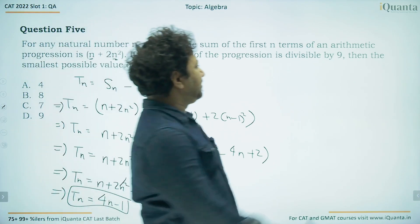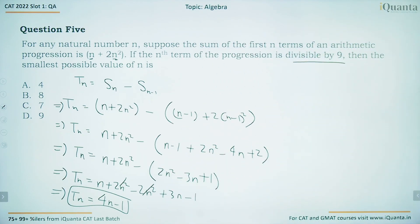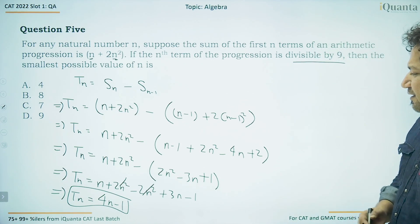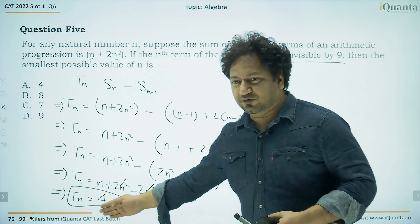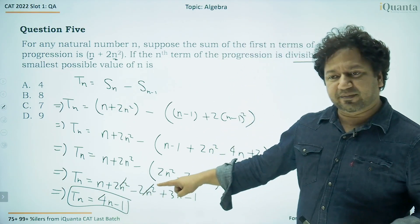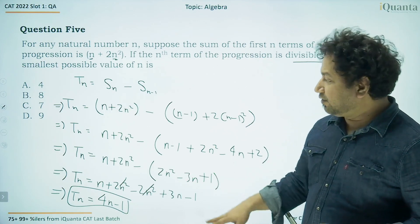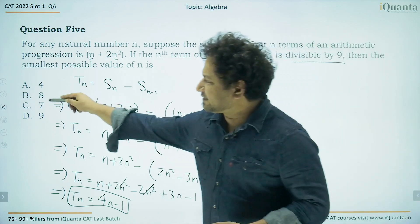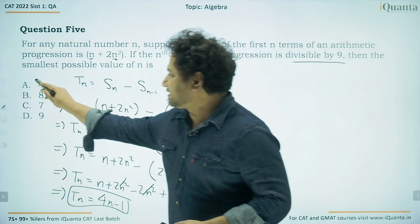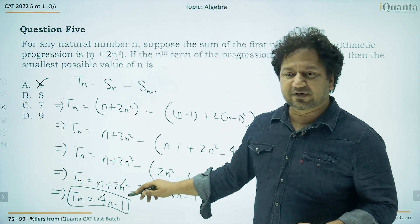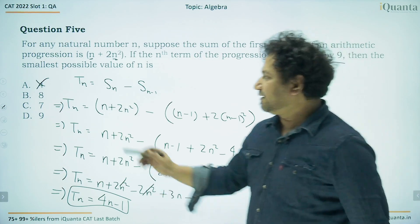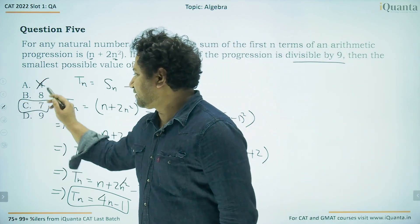We need 4n − 1 to be a multiple of 9. Testing values: n = 2 gives 7 (no), n = 3 gives 11 (no), n = 4 gives 15 (no). Using the answer options, n = 7 gives 4(7) − 1 = 27, which is a multiple of 9. So the smallest possible value of n is 7.